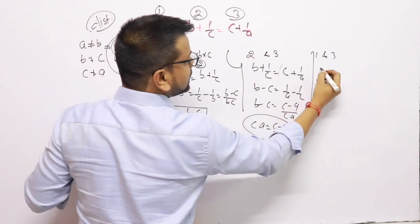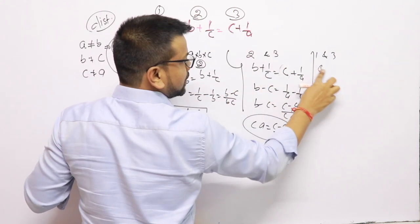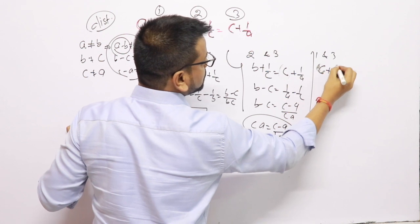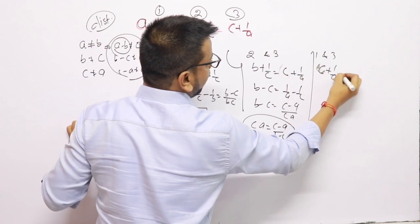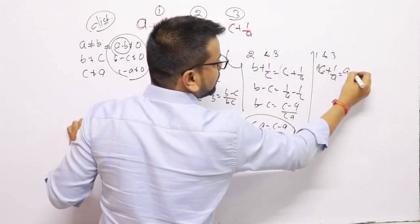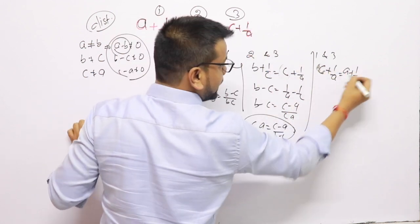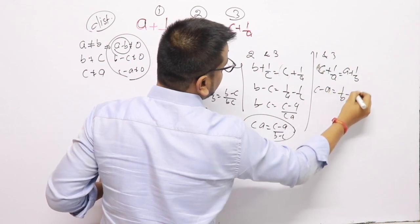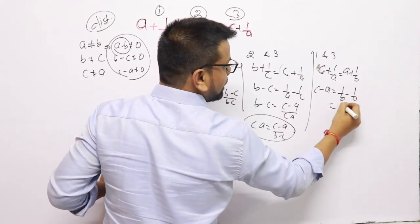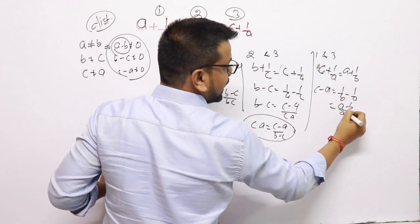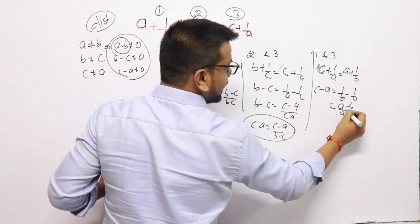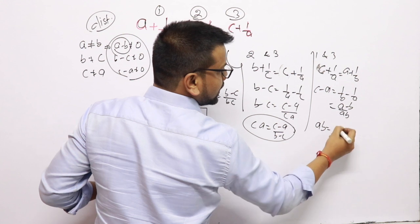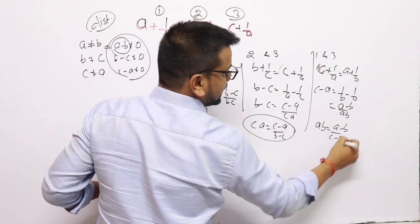Now from equations 1 and 3: c + 1/a = a + 1/b. This gives c−a = 1/b − 1/a = (a−b)/(ab). So ab = (a−b)/(c−a). That is the third equation.